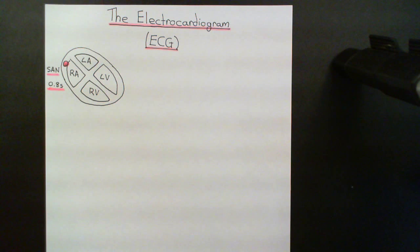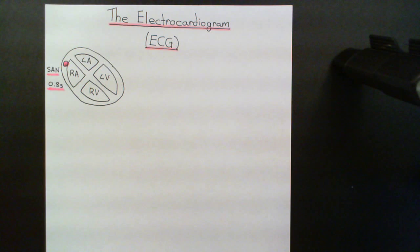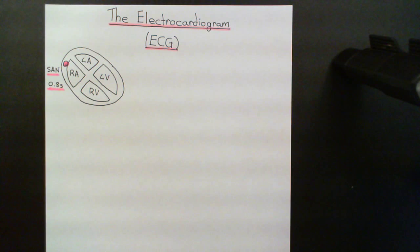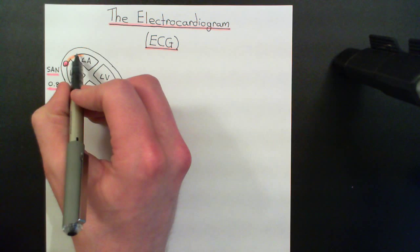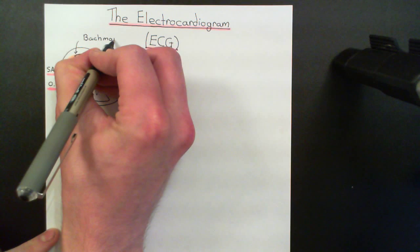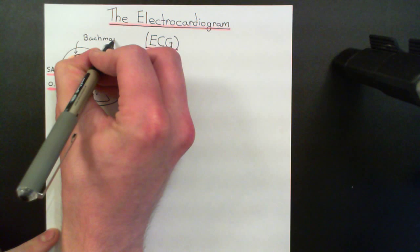It's generally believed there are specialised conduction pathways in the atrium which deliver the signal faster than through contractile cardiomyocytes. There are two major types: interatrial conduction pathways and internodal conduction pathways. There is one interatrial conduction pathway — Bachmann's bundle — which carries the electrical signal from the sinoatrial node to the left atrium so the left atrium contracts at the same time as the right atrium. We also believe there are three internodal conduction pathways which take the signal to the atrioventricular node.